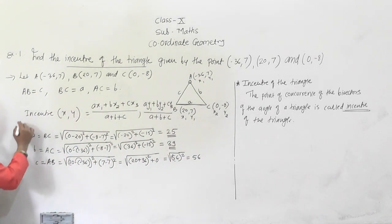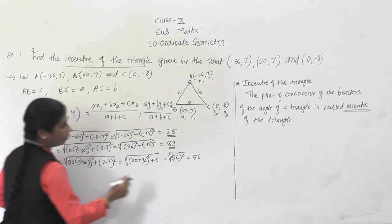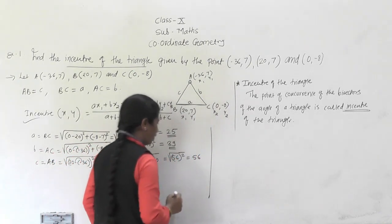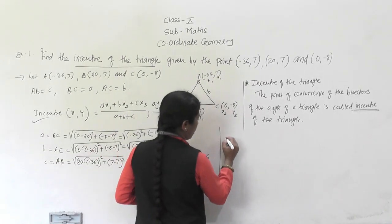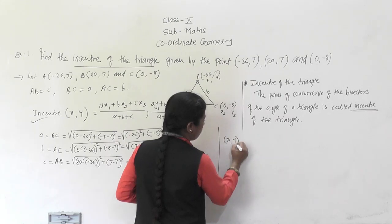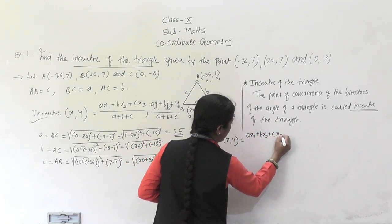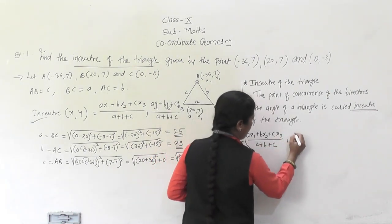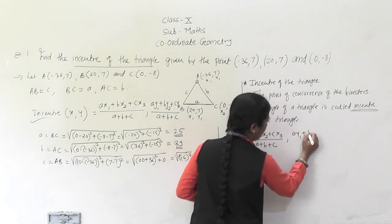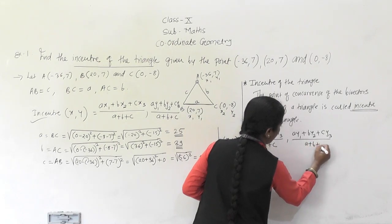Now we will use the incenter formula. The incenter (x, y) = [(a·x1 + b·x2 + c·x3) / (a + b + c), (a·y1 + b·y2 + c·y3) / (a + b + c)].